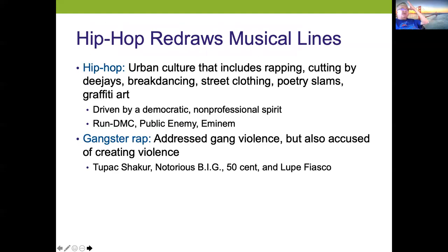Also in the 90s into the 2000s, hip hop drew a lot of musical lines. Hip hop was urban culture including rapping, cutting by DJs, break dancing, street clothing, poetry slams, and graffiti art — driven by a democratic, non-professional spirit. Run DMC, Public Enemy, and Eminem were big. Gangster rap addressed gang violence but was also targeted as creating violence — Tupac, Notorious B.I.G., 50 Cent, and Lupe Fiasco were all part of that.